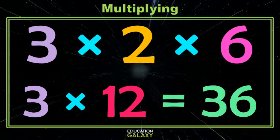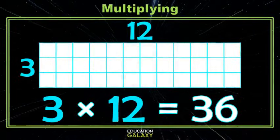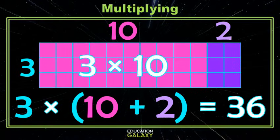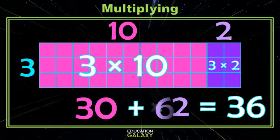We also learned that when we have bigger numbers we could break them up. For instance, here we could split that 12 into a 10 and a 2. Then we've created two separate products and ultimately we'll need to add those to get to our final answer.